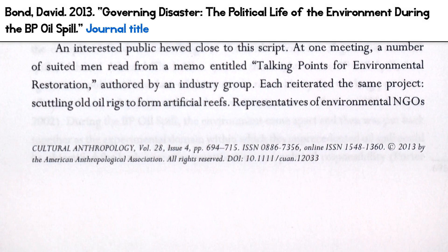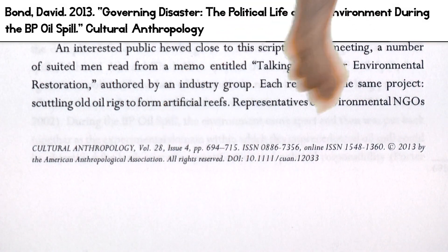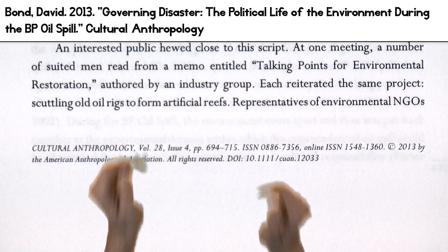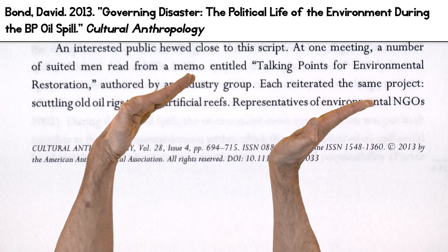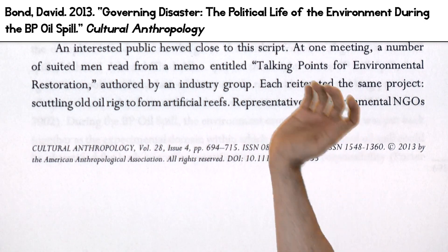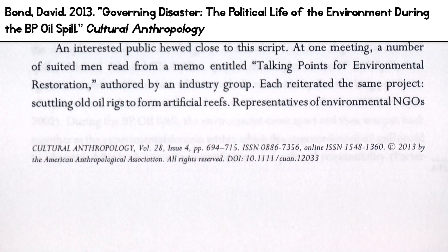The journal title comes next. This is the big thing that contains the article, and we have a code to indicate that too: italics. Big things like journals always have their titles in italics. No period after this one, though, because we're not done with it yet.